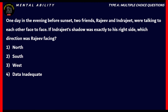Let's look at another question on Mental Ability. One day in the evening before sunset, two friends Rajiv and Indrajeet were talking to each other face to face. If Indrajeet's shadow was exactly to his right side, which direction was Rajiv facing? We're told it's evening before sunset, so the sun will be in the West.